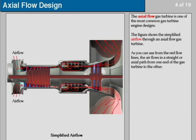The figure shows the simplified airflow through an axial flow gas turbine. As you can see from the red flow lines, the air flows in a straight or axial path from one end of the gas turbine to the other.